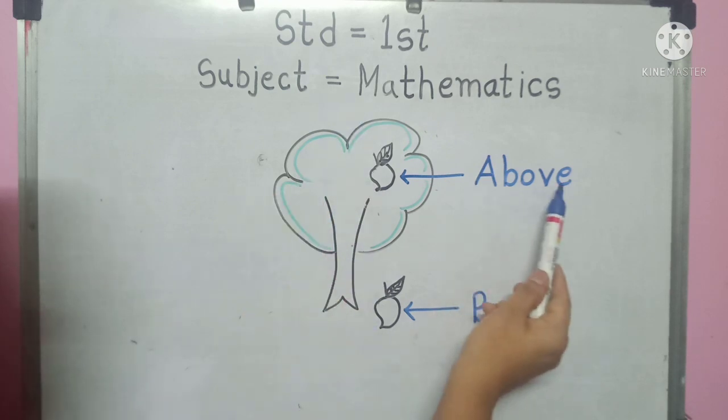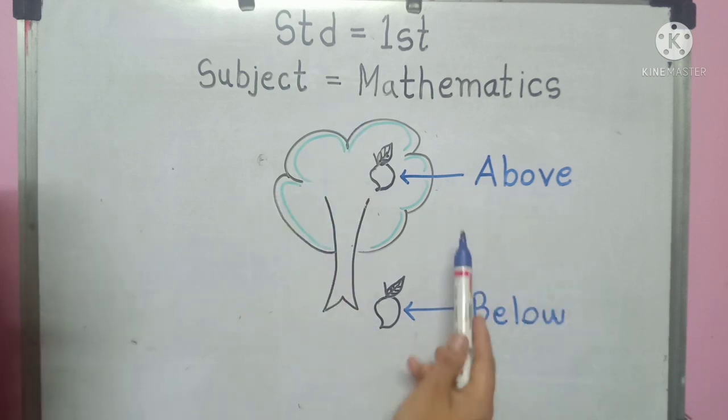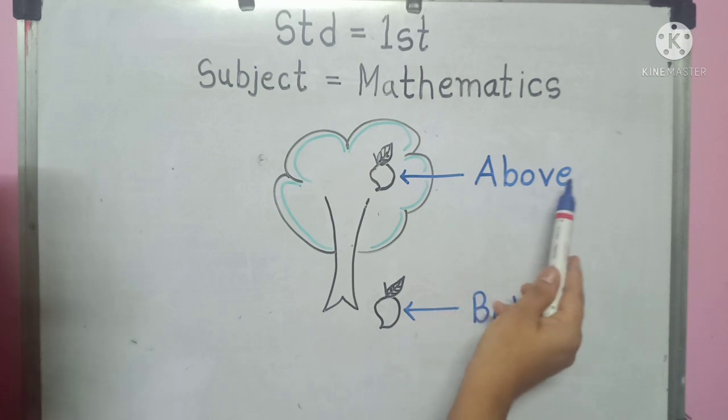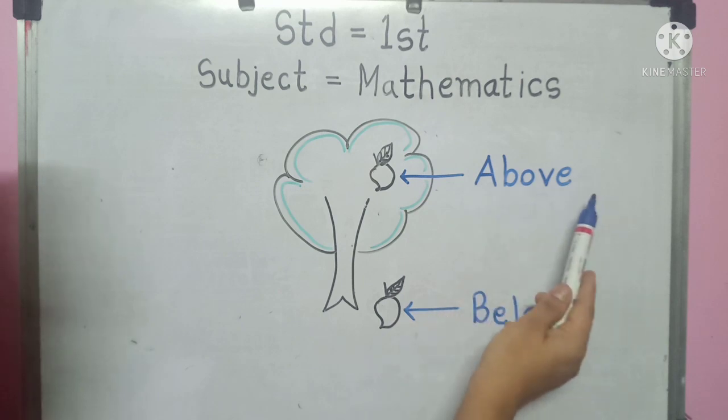What is the spelling of 'above'? A, B, O, V, E — above. Let's say it together with me, students: A, B, O, V, E — above.